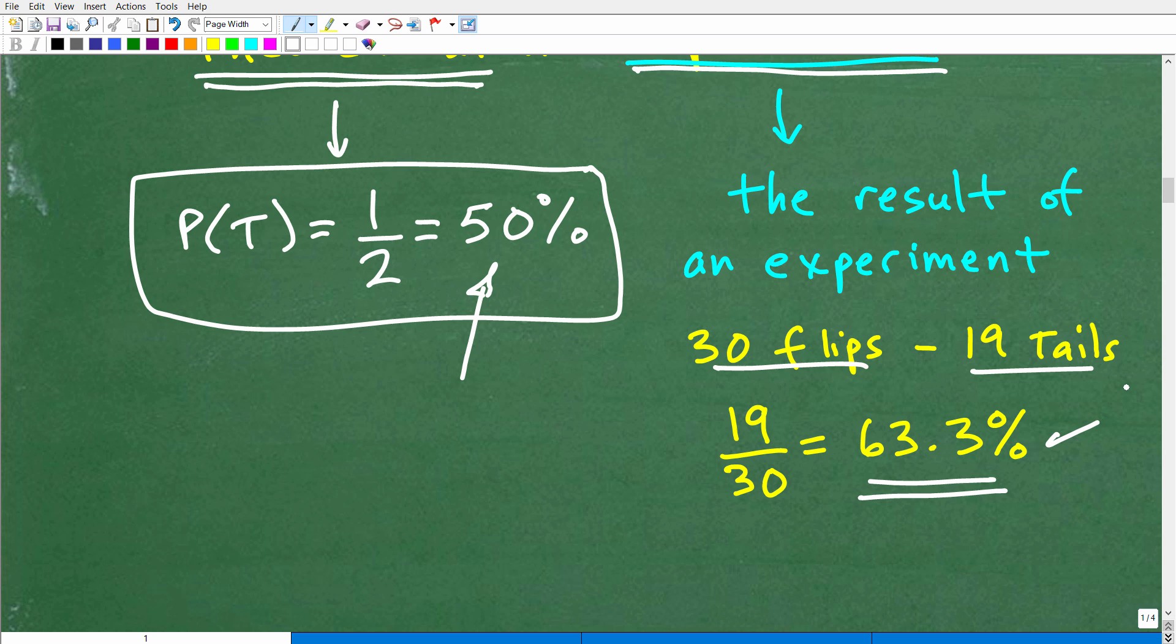Okay, so, hmm, interesting. So we have a fair coin. Are we saying that every time you flip a fair coin, you have a 63.3% of it landing on tails? Well, that doesn't make sense, right?